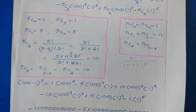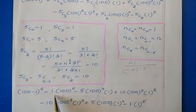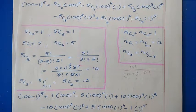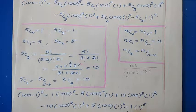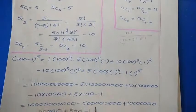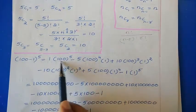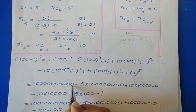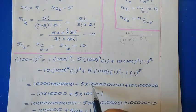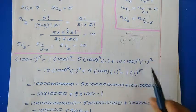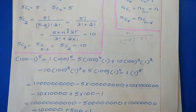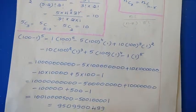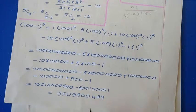Substituting all values: 1 times 100 to the power 5, minus 5 times 100 to the power 4, plus 10 times 100 cubed, minus 10 times 100 squared, plus 5 times 100, minus 1. Writing each power of 100 directly and computing, after adding and subtracting all terms the final answer is 9509900499.